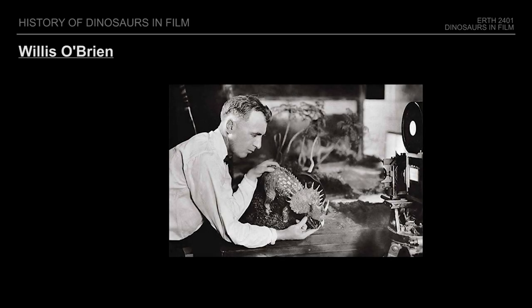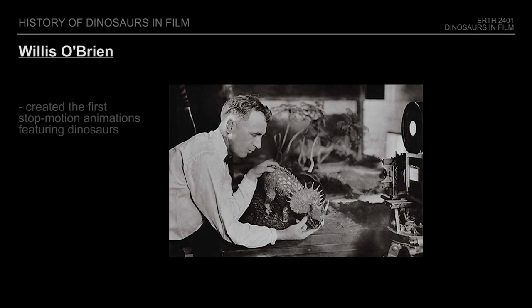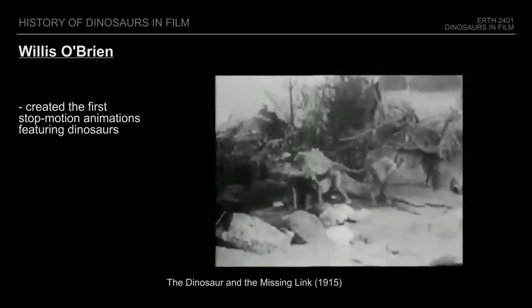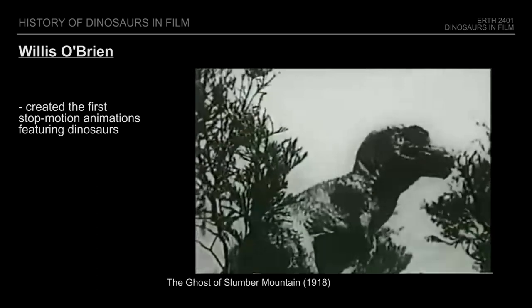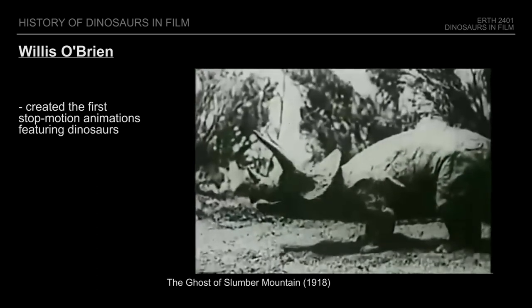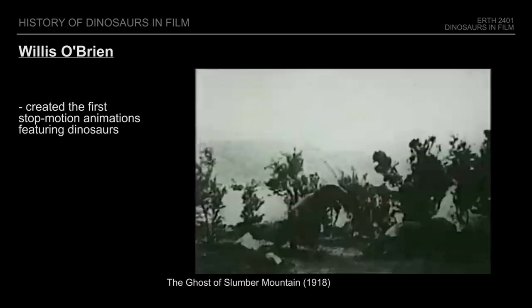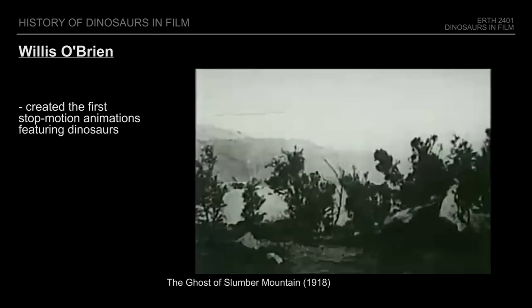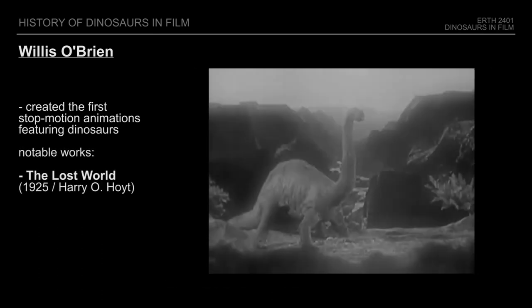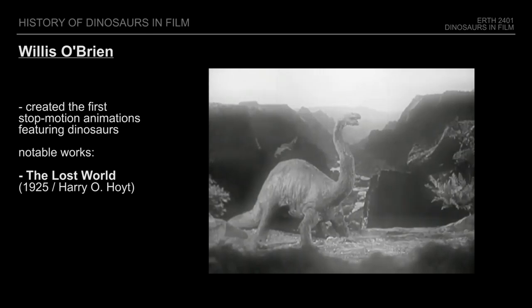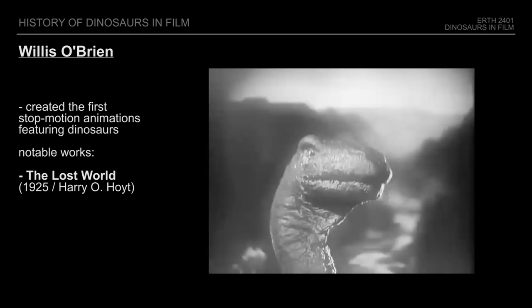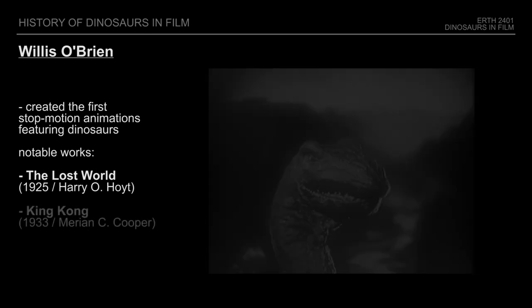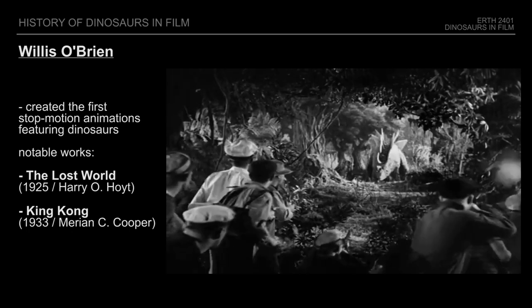Only one year later, Willis O'Brien would become the first to animate dinosaurs using stop-motion animation — the process which involves photographing models frame-by-frame in order to create the appearance of motion. After his early successes, he would go on to lead the work on a multitude of large productions, including the widely renowned classics The Lost World in 1925 and King Kong in 1933.